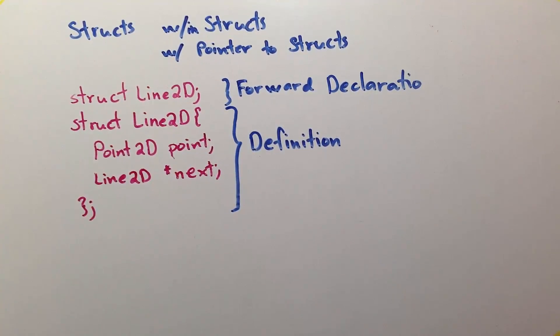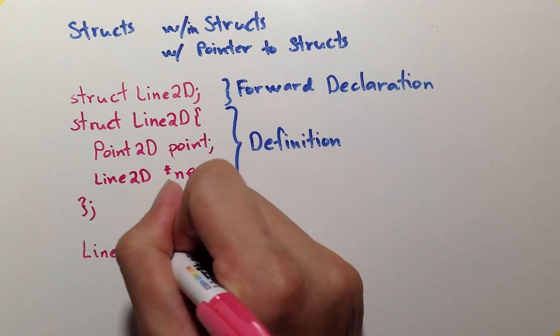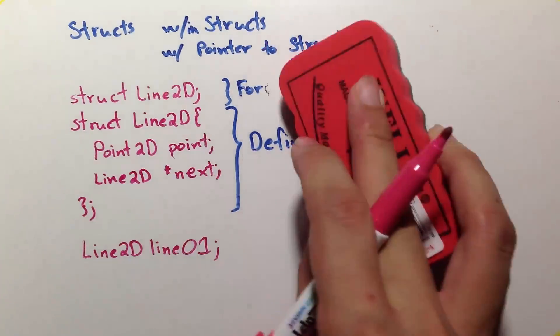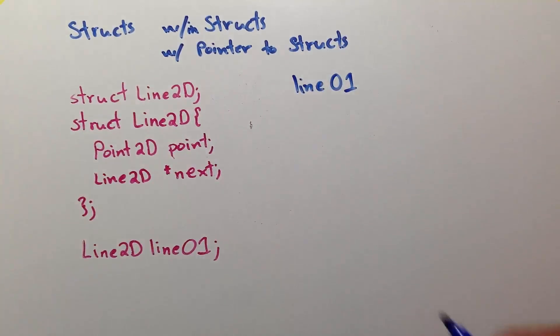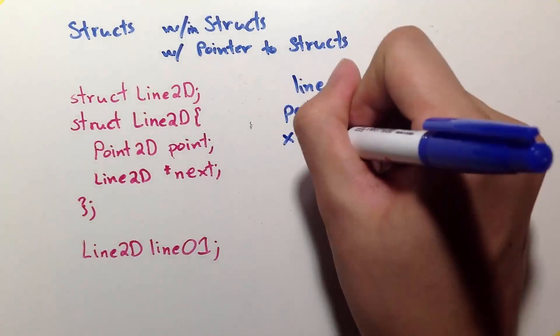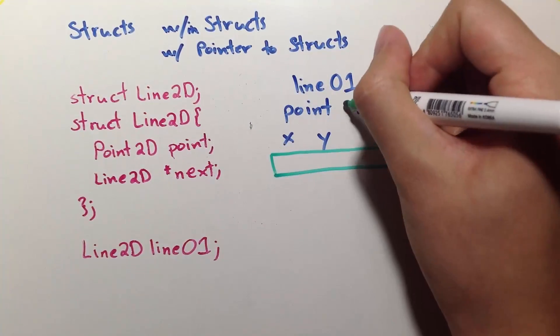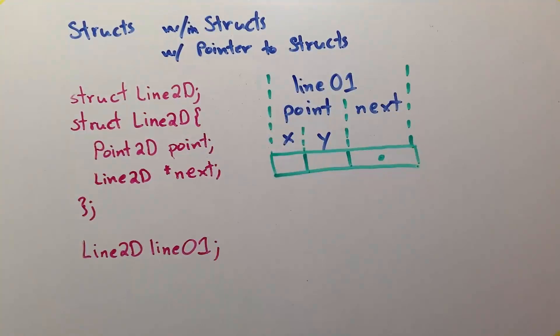Now, let's move on and create our first line2d called line01. In memory, it looks like this. It has two children where the first child, point, has two other children, x and y. Next is just a pointer and not the structure itself. And it can only point to variables of type line2d.